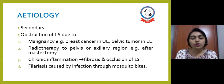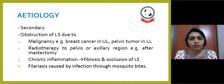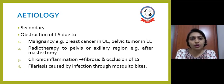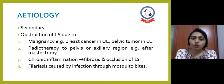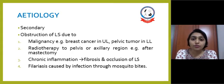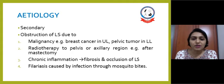In secondary lymphedema there is obstruction of the lymphatic system due to malignancy — for example, breast cancer in the upper limb and pelvic tumors in the lower limb. Radiotherapy to the pelvis or axillary region, especially after mastectomy, causes chronic inflammation leading to fibrosis and occlusion of the lymphatic system. Filariasis, caused by infection through mosquito bites, is very common in developing countries like India and Africa, where lymphedema of the lower limb is frequently seen.